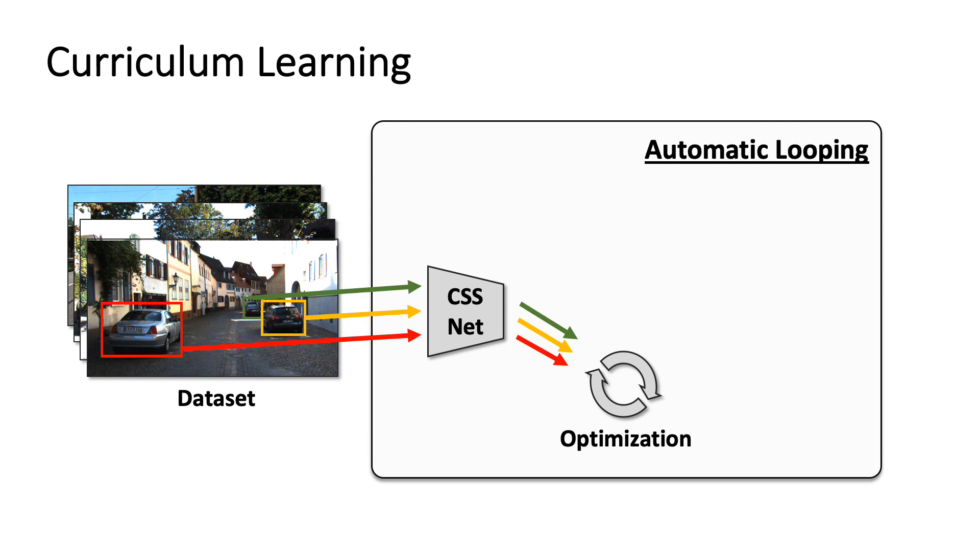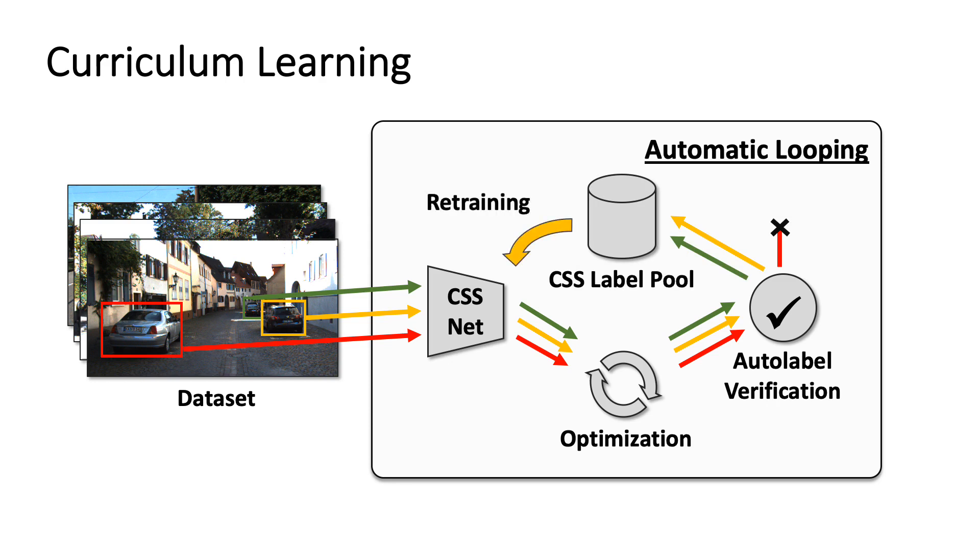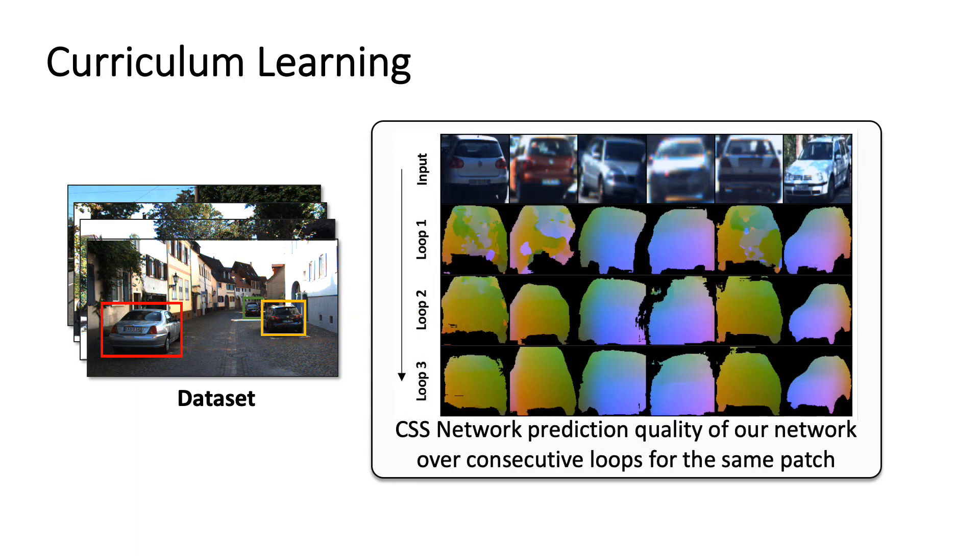To improve the quality of the CSS net predictions, we employ a curriculum procedure. Namely, we add a verification to discard incorrect auto labels before saving them into our CSS label pool. Once all frames are processed, we retrain our CSS network and begin the next loop over the dataset. As a result, we eliminate the domain gap problem and the CSS net predictions become more accurate.